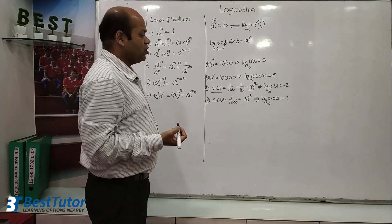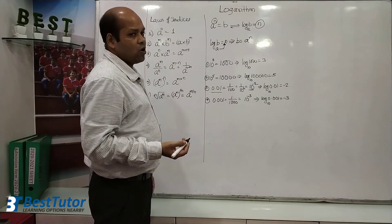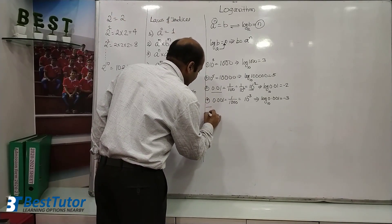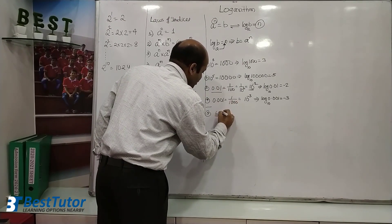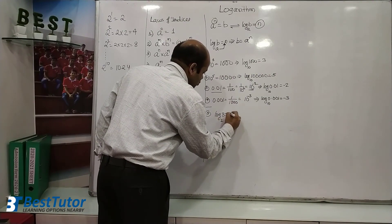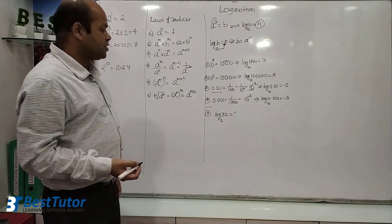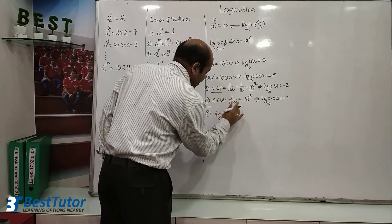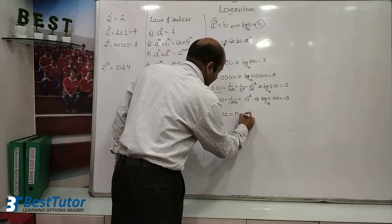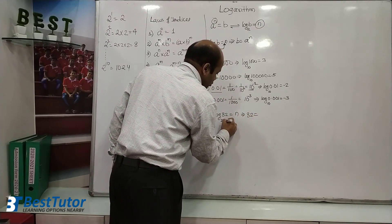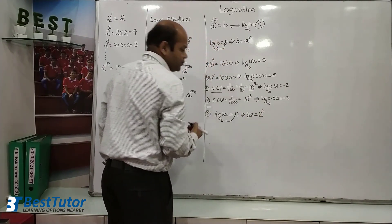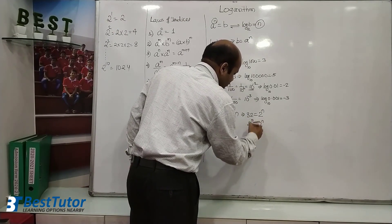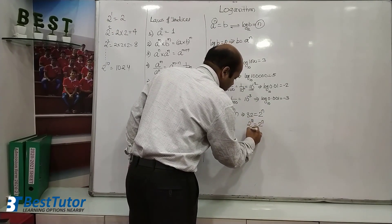That is the way of converting an exponential value into log value. Now let's do the reverse — convert a log value into exponential. If I say log of 32 to the base 2 equals n, I make it equal to n, remove the log, and it becomes 32 is equal to 2 raised to n. What is 32? It is 2 raised to 5 equals 2 raised to n. Therefore, left side equals right side: n is equal to 5.